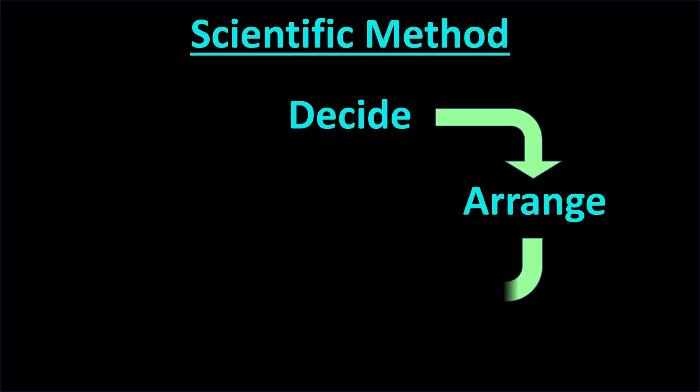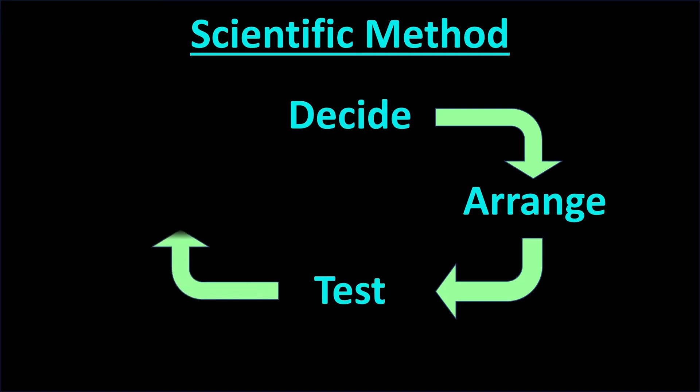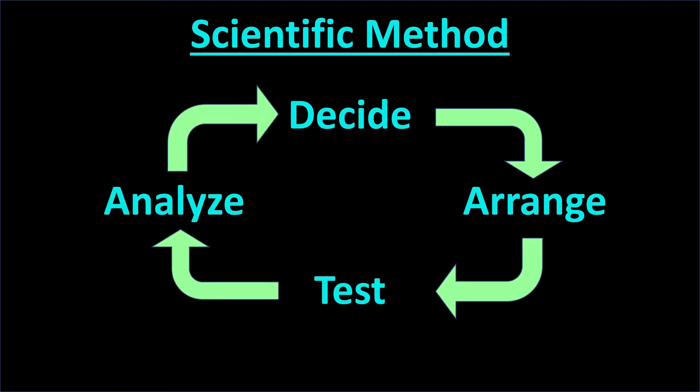To summarize, here are the four basic steps of the scientific method. We often write these as a circle, to show that as we learn the answer to one question, we then ask another question and repeat the cycle.